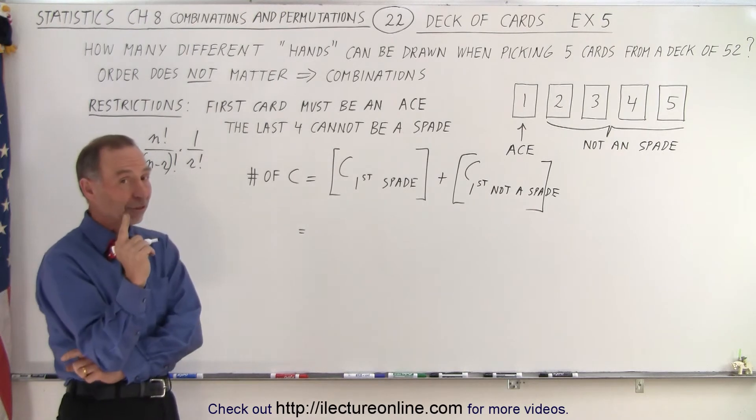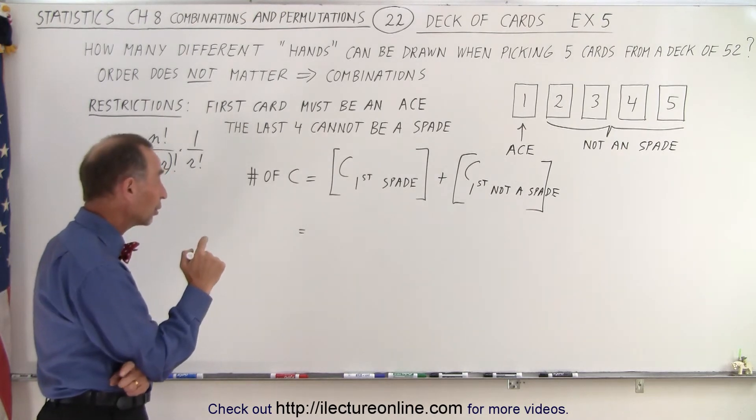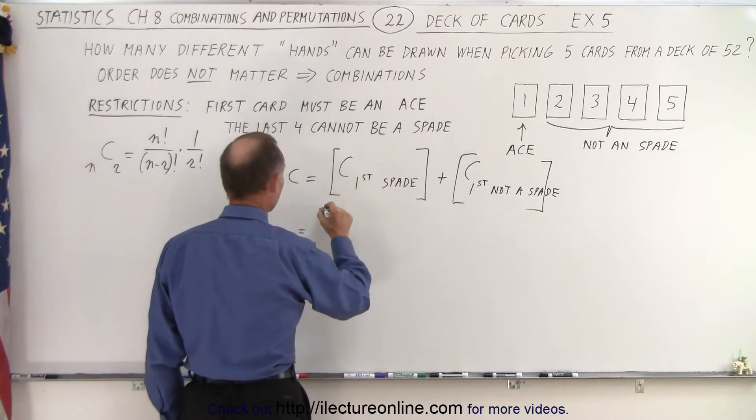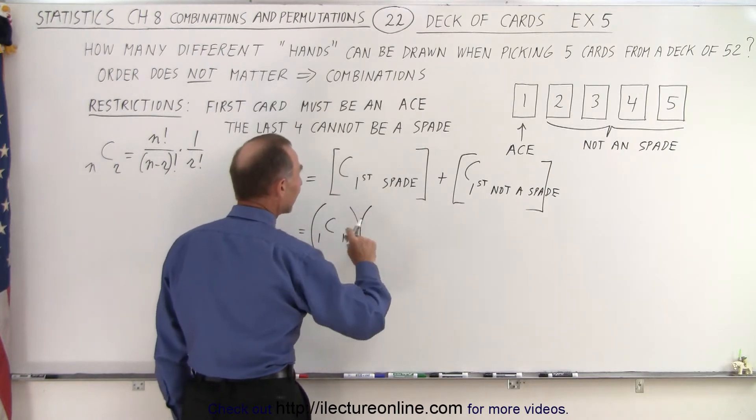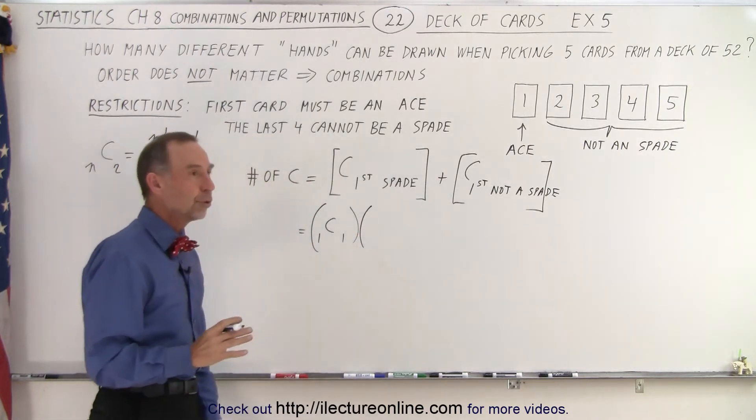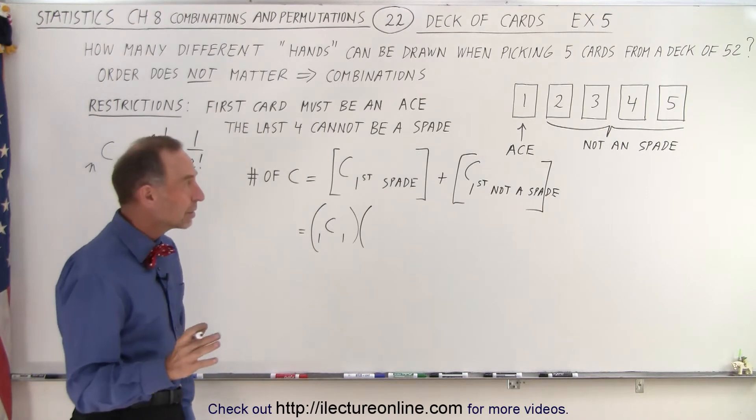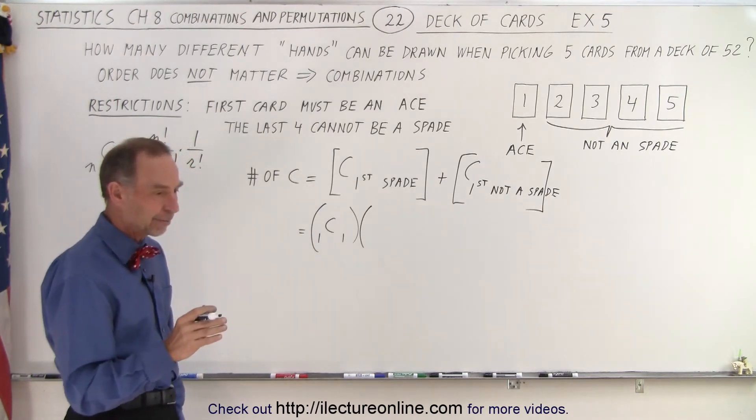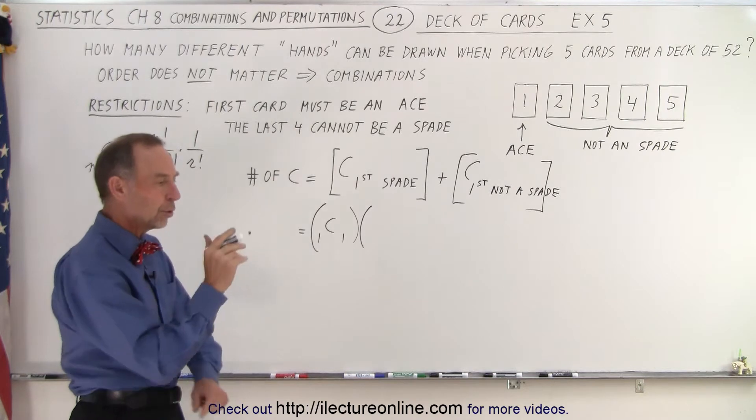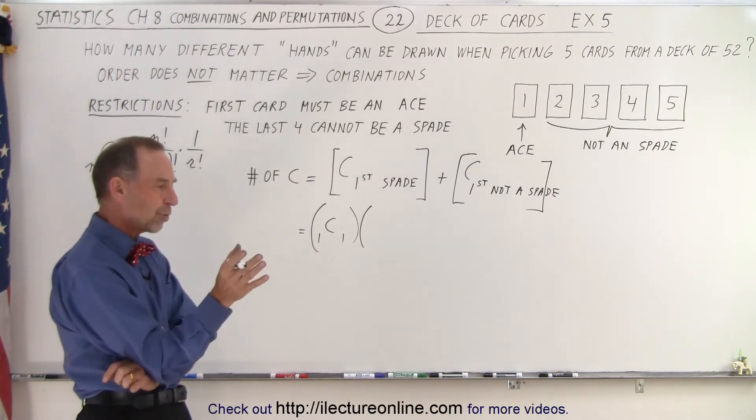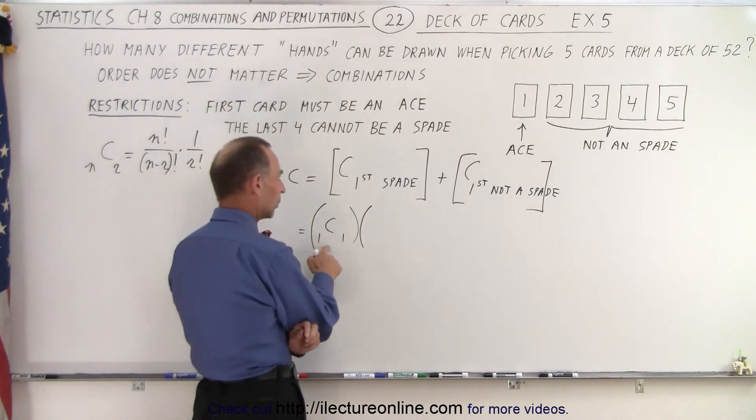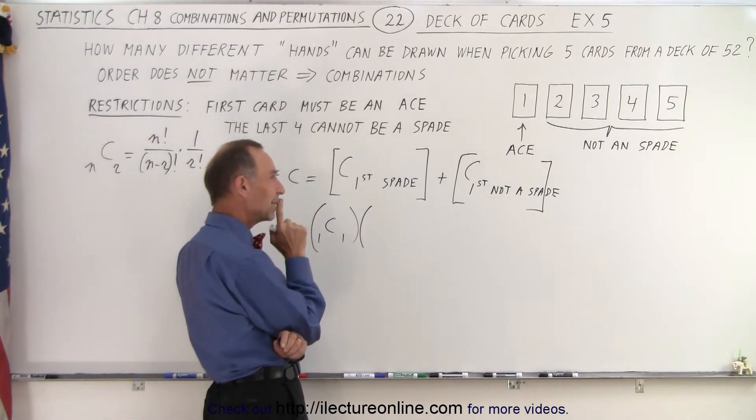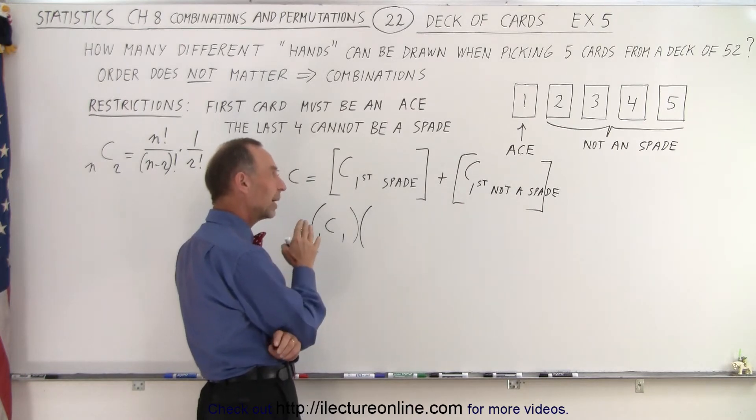Well, there's only one ace of spades, and we can only draw that one card. So in this case, that would be C(1,1). There's only one ace of spades, and we're drawing it. And then, the next four cards, notice, now there's only 12 spades left. So we need to subtract. We can't draw a spade, and we've already picked one away. So what that means is we have to remove all 13 spades.